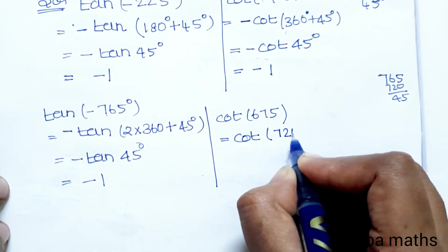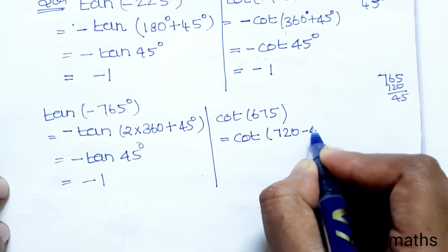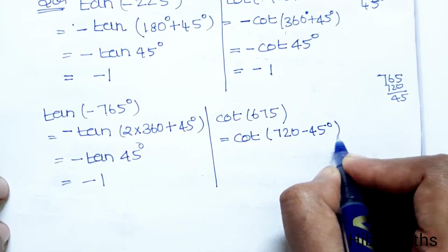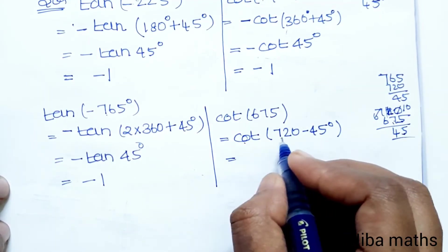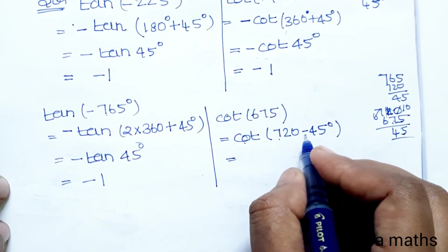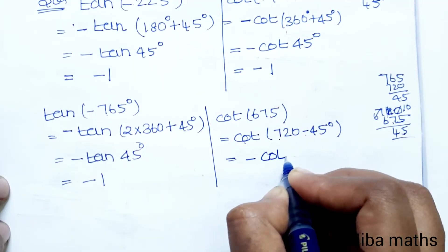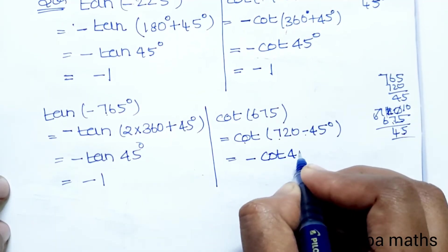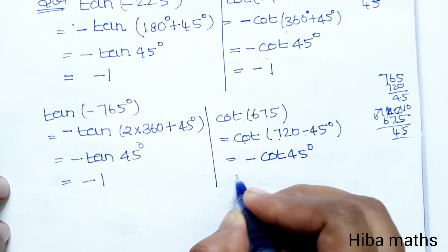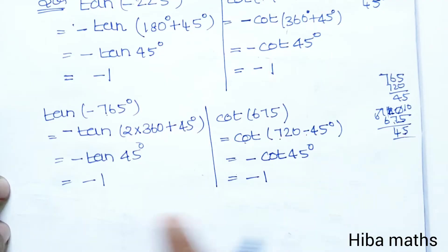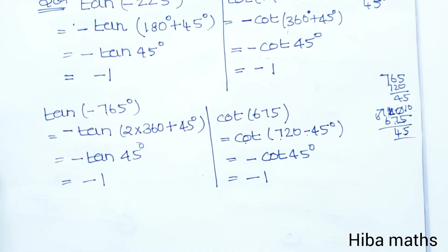Now solve cot(675°). We write 675° = 720° - 45°, so cot(720° - 45°) = -cot(45°) = -1. So all four values have been computed.